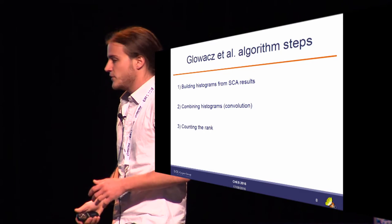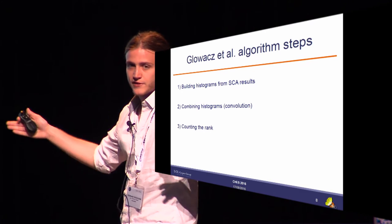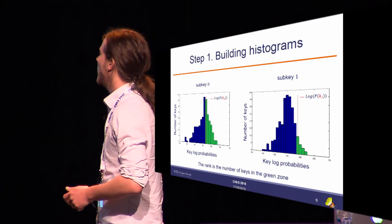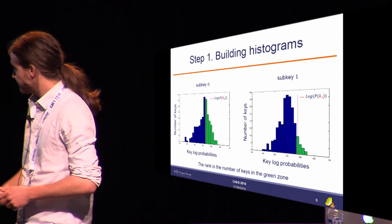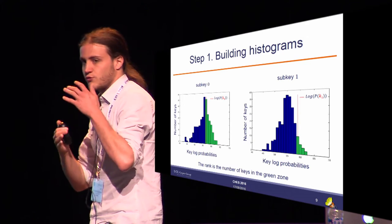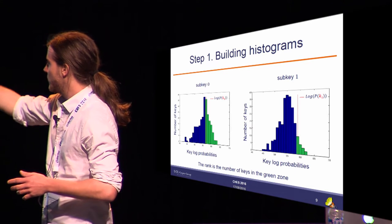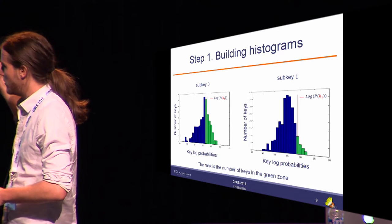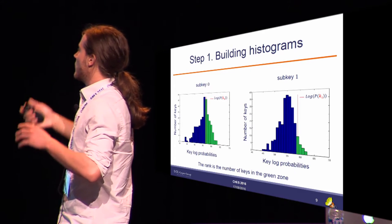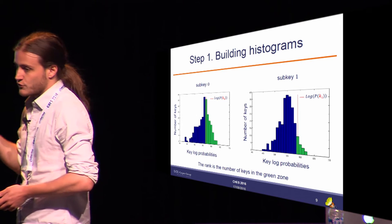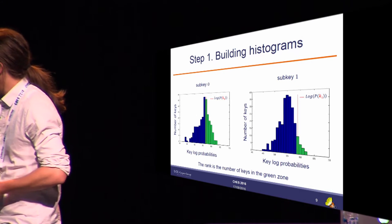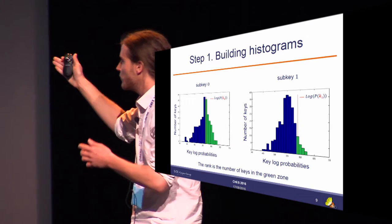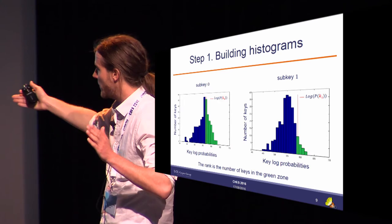The algorithm works in three steps. First, it builds histograms from the side-channel attack results — the n lists of 256 probabilities. Looking at the histogram for sub-key 0: on the y-axis is the number of keys with log-probabilities given by the x-axis. As an evaluator I know the real key, so I know its probability and which bin it falls into (shown by the red curve). To know the rank of this sub-key, I just count how many elements are in the green zone — all bins to the right of the actual key. I use log probabilities because convolution (used for combining histograms) requires additive properties, whereas raw probabilities are multiplicative.